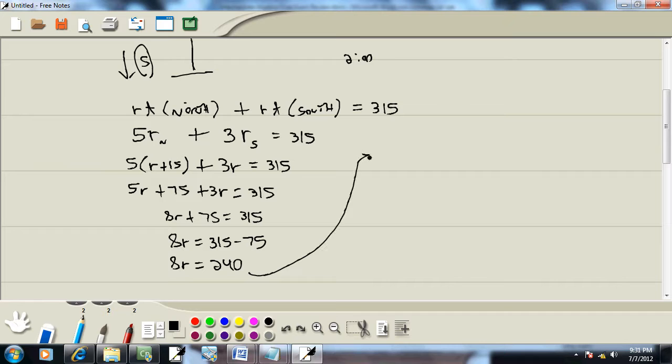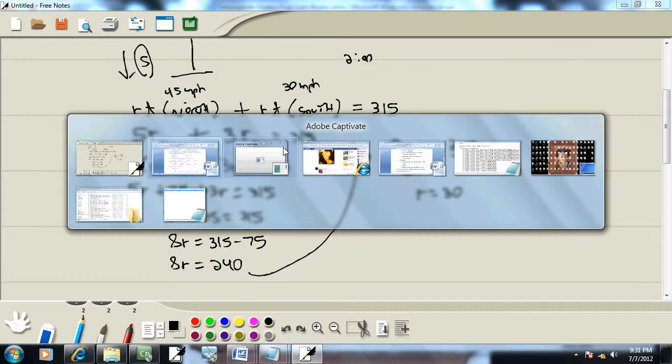Yeah 240. And last step, divide both sides by the number in front of your r, which is 8. And we get r is equal to 30 miles. Now that's the southbound. So southbound is going 30 miles per hour, and if the northbound is going 15 miles an hour faster, they'll be going 45 miles per hour.